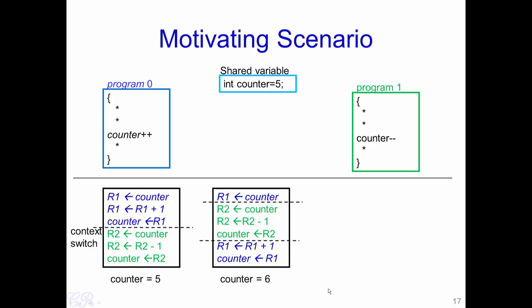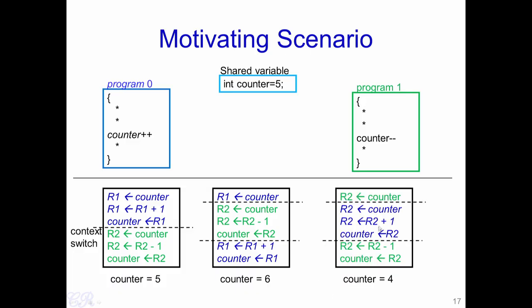The third case gives counter = 4, which is exactly the opposite. Program 1 executes first, loading counter (value 5) into R2. A context switch causes program 0 to execute: counter is loaded into R1, incremented to 6, and written back, so counter becomes 6. Then a context switch restores program 1, with R2 still holding 5. R2 is decremented to 4 and stored into counter. Thus at the end of this execution, the value of counter is 4.